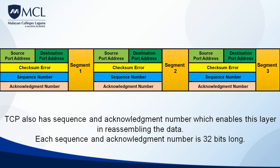TCP also has a sequence number and acknowledgement number, which enables the transport layer to reassemble data. This is very important because in real scenarios, very long data doesn't always arrive in order at the receiver — segments can get mixed up. Without sequence and acknowledgement numbers, the data could be scrambled when it arrives. With them, it's easy to reassemble data back into chronological order at the transport layer. The sequence and acknowledgement numbers are 32 bits long.